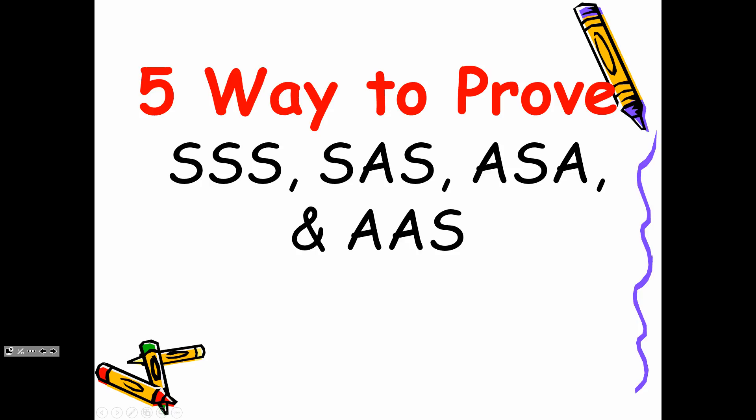There are five ways to prove triangles are congruent — these five ways you need to have memorized and know how to identify. We have Side-Side-Side: SSS. You need three sides — three sides, three sides. We got it.